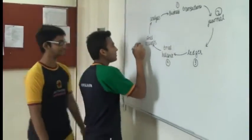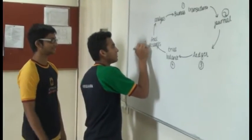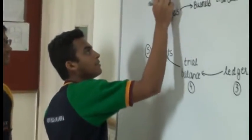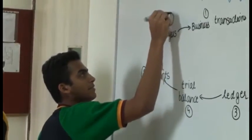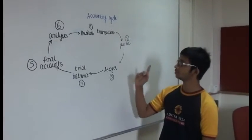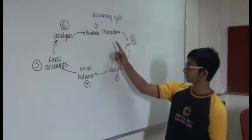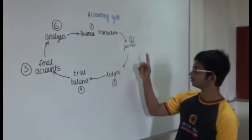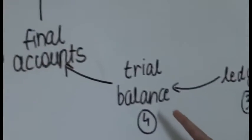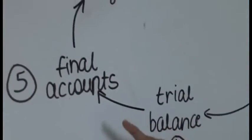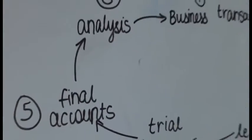Hello friends, do you know what is the accounting cycle? The accounting cycle includes business transactions, the journal, the ledger, the trial balance, the final accounts, and finally analysis and interpretation.